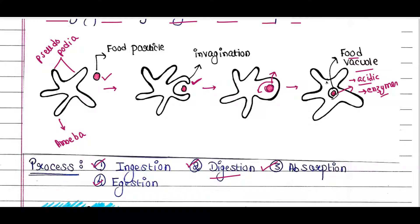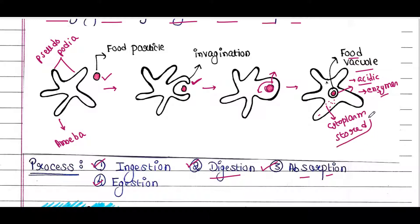Next process is absorption. The digested food particles diffuse from the food vacuole into the cytoplasm of the cell. This process is called absorption, and the cellular cytoplasm will utilize those digested food particles. If some food particles are extra, those will be stored in the cytoplasm in different granules.